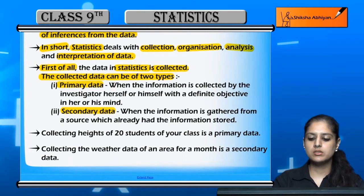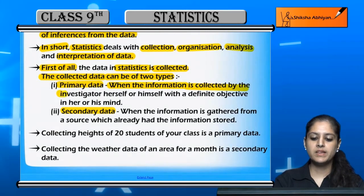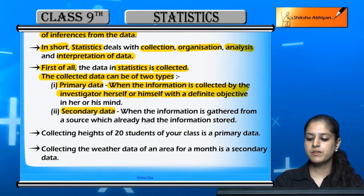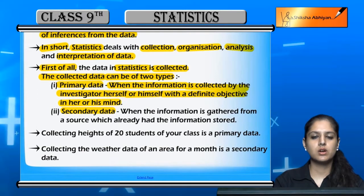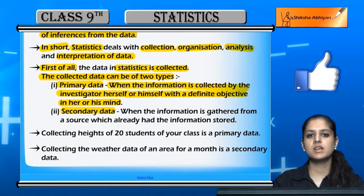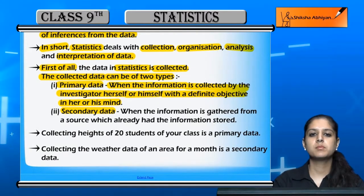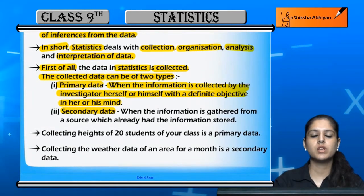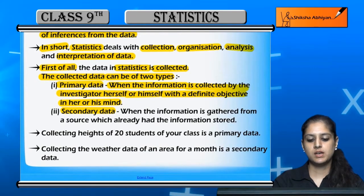One is primary data and one is secondary data. Primary data is when the information is collected by the investigator herself or himself with a definite objective in his or her mind. If the investigator is collecting data, he directly collects data himself, and in his mind a set of objectives is defined. So this data is called primary data.